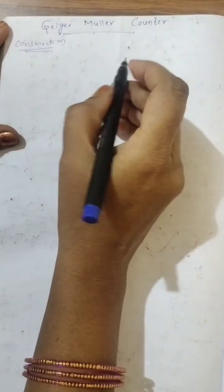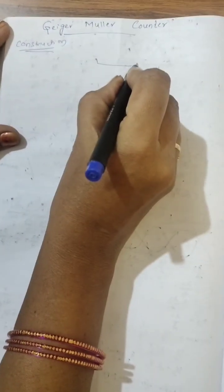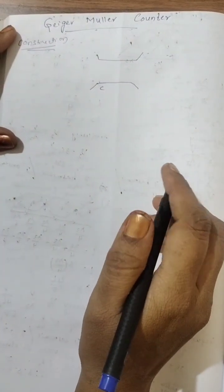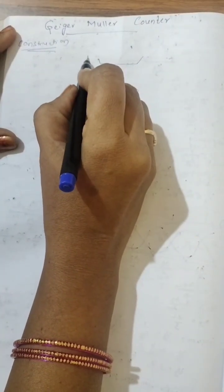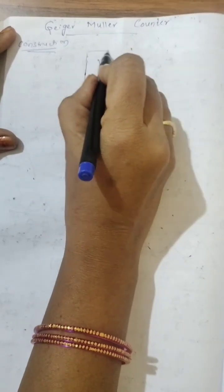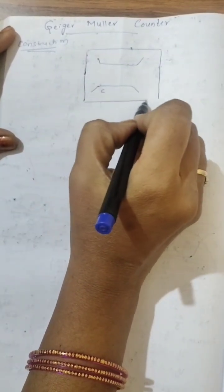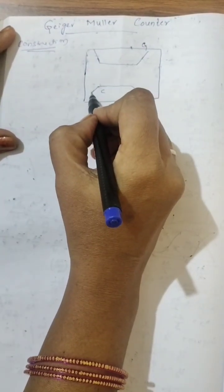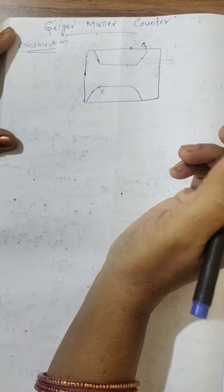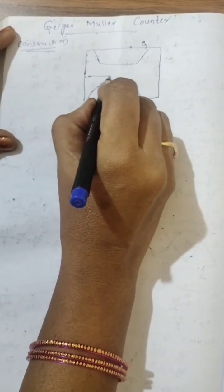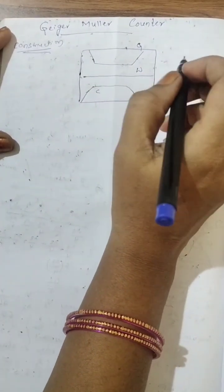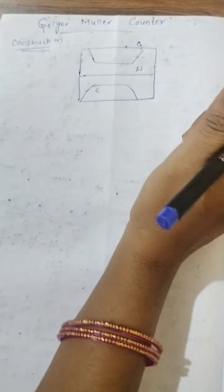The GM counter consists of a cylindrical copper tube C. This copper tube is placed in a glass tube G. A tungsten wire W passes across this copper tube.